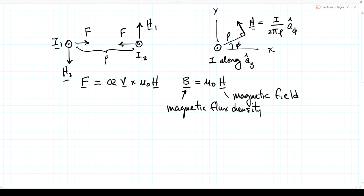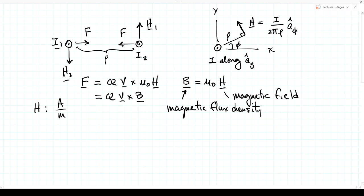From the expression H = I over 2π ρ, H has units of amps per meter — just as the electric field has units of volts per meter. To find the units of B, we use F = q v × B. Force is newtons, charge is Coulombs, and velocity is meters per second, so B must have units of newtons per Coulomb times seconds per meter, which gives newton-seconds per Coulomb-meter.